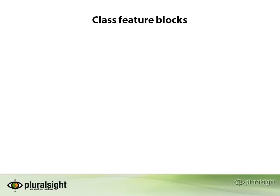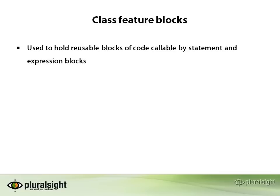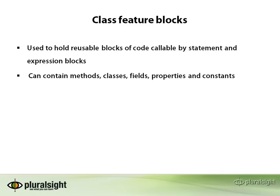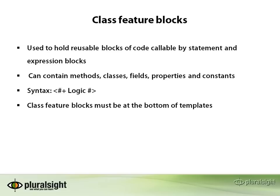The final building block is the class feature block. Class feature blocks contain code that can be called from statement and expression blocks, usually helper methods or complex logic that needs to be reused in multiple places. Class feature blocks are used to define methods, classes, fields, properties, and constants — any code that is allowed in the scope of a class will be allowed in a class feature block. We define these blocks using the angle bracket hash pair and a plus sign to denote that it's a class feature block. Class feature blocks should come last in any template file; only other class feature blocks can occur after a class feature block. Statement, text, and expression blocks are not valid if they occur after, and you'll get a compilation error if you try.